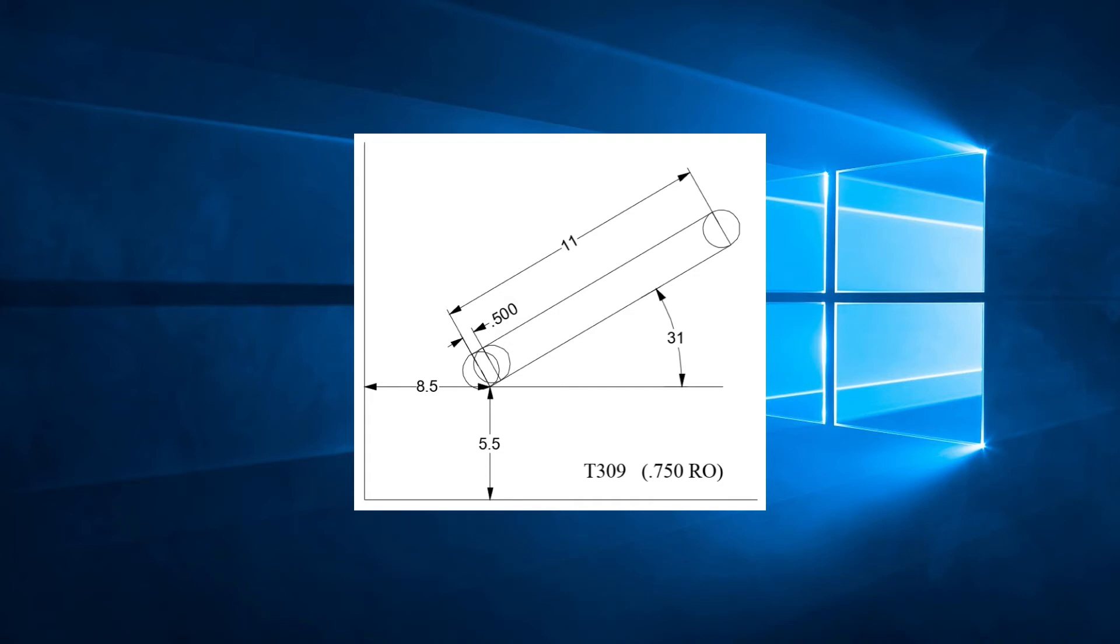We also see that the pitch specified is 0.5 inches between hits. In this case, let's say the material thickness is 0.090 inches.